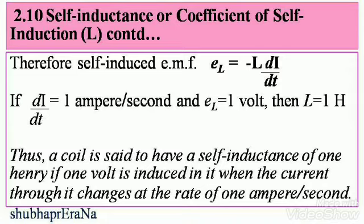If dI/dt equals 1 ampere per second and EL equals 1 volt, then L is 1 Henry. Thus, a coil is said to have a self-inductance of 1 Henry if 1 volt is induced in it when the current through it changes at the rate of 1 ampere per second. These are three ways to express self-inductance or the coefficient of self-induction in a coil. All three methods are helpful in applications to come. Note down all the formulas for self-inductance.